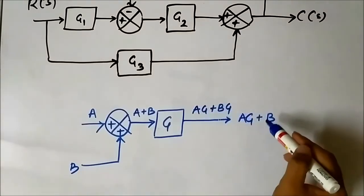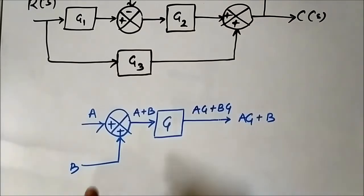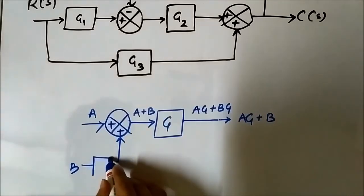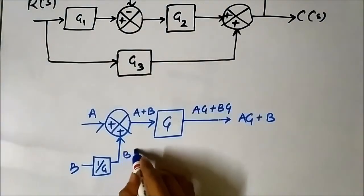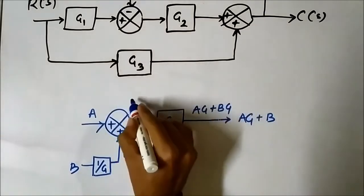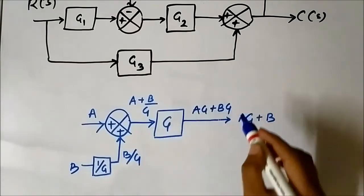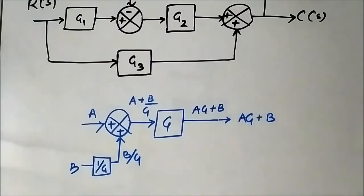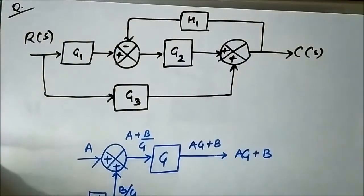How can we convert a·g plus b·g into a·g plus b? We have to make some changes. Suppose we add another block of 1/g on the bottom path. The output will be b/g, so this becomes a plus b/g. When it passes through block g, it becomes a·g plus b/g·g, which is b. Now the input-output relationship holds — the manipulation is correct. So if we wish to shift the summer and the block, we have to add a 1/g block on the incoming signal path.